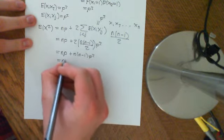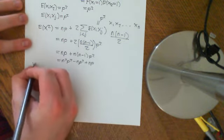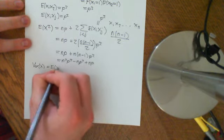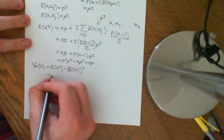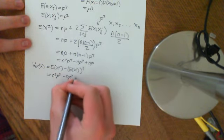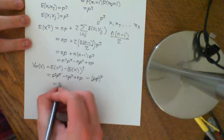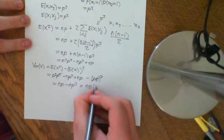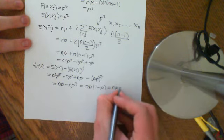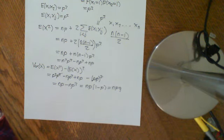The variance of x is the expected value of x squared minus the expected value of x, all squared. The expected value of x was np, so we compute n²p² − np² + np − n²p². The n²p² terms cancel, leaving np − np squared. Factoring out np gives np times (1 minus p), which equals npq. So there we are — another way to derive the variance of the binomial distribution, getting the exact same answer as using the linear property of the variance for independent random variables.